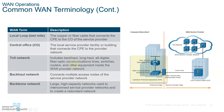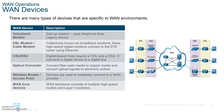The CSU/DSU is a type of DCE device. Other DCE devices include the voiceband modem, DSL modem, cable modem, optical converter, and wireless router. DTE devices include your PCs, while the modem at home acts as the DCE device that converts your data and prepares it to communicate with the central office.